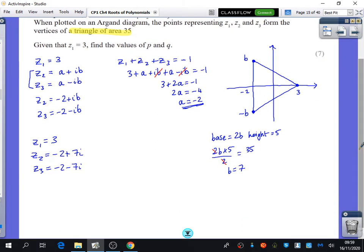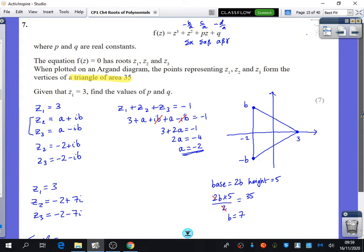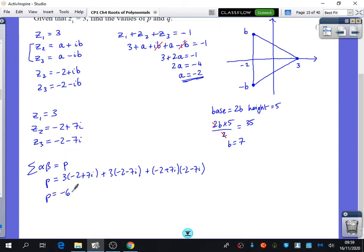So let's actually do that. We now know that the sum of the root pairs, the product pairs, is going to be equal to p over 1. So the sum of the pairs is equal to p. So that's going to be 3 times minus 2 plus 7i plus 3 times minus 2 minus 7i plus minus 2 plus 7i times minus 2 minus 7i.